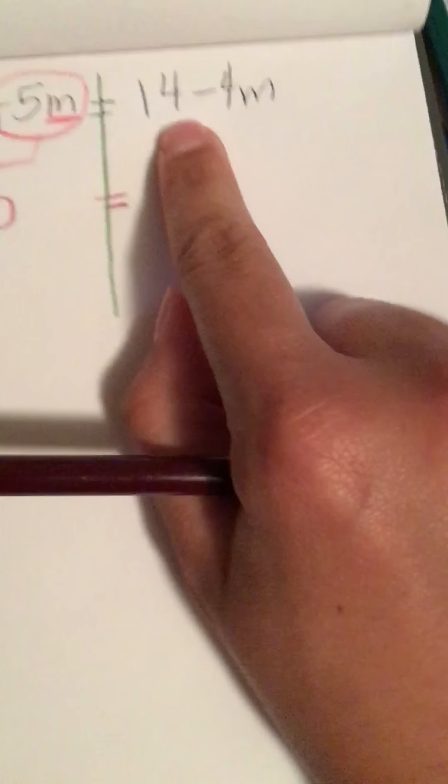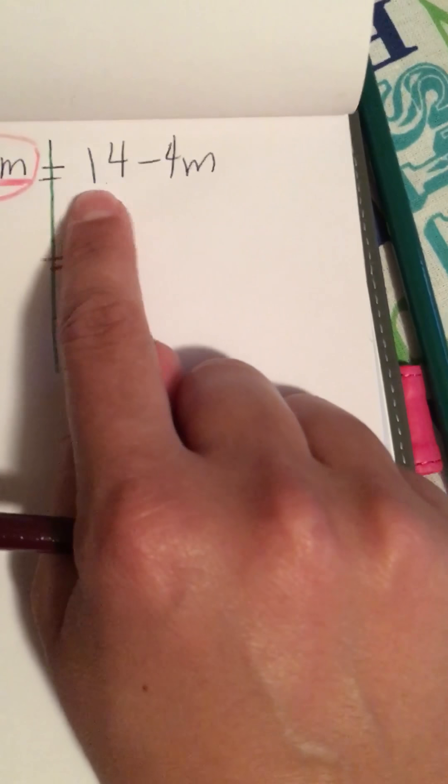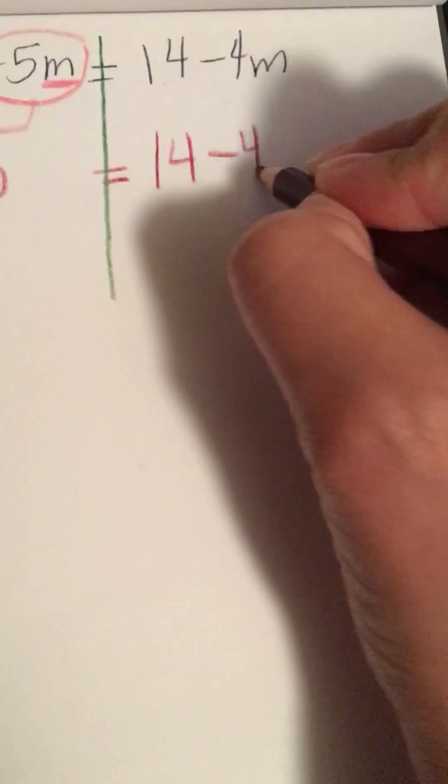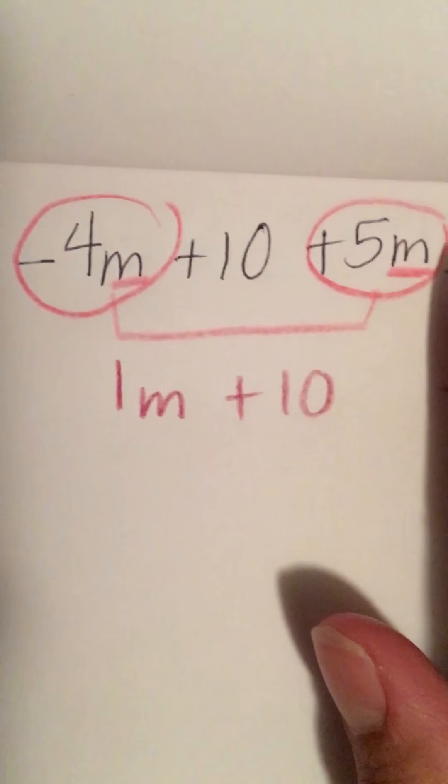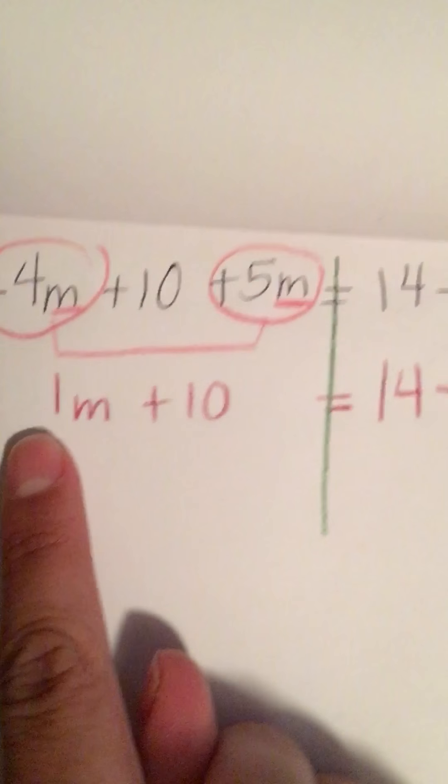Now I can look at the other one. The other one is 14 minus 4M. It's already simplified all the way. There is no distributive, there is no like terms to combine, so I just bring it down. Nothing happened to it. After that step where I cover each side and simplify each side, now I'm going to look at the whole thing and decide if the variable is in the same team.